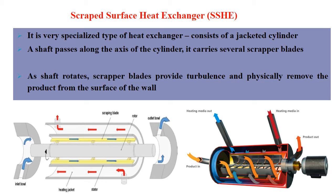Another method of indirect heat exchange is the scraped surface heat exchanger. This is a very specialized type, consisting of a jacketed cylinder. A shaft passes along the axis of the cylinder and carries several scraper blades. As the shaft rotates, the scraper blades provide turbulence and physically remove the product from the wall surface. The outer chamber carries the heating medium, while the inner chamber holds the milk, which is continuously scraped by the rotor with the scraping device. The right-side diagram further explains the scraper. This is a modern method for quick heating in UHT processing.